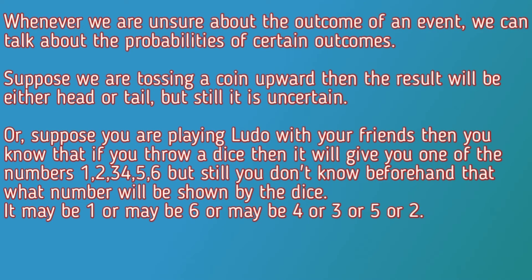It may be 1, or may be 6, or may be 4, 3, 5, or 2. So this type of uncertainty is studied under probability, where you know the results beforehand but could not predict the exact result. Let's have a look at some concepts related to probability.